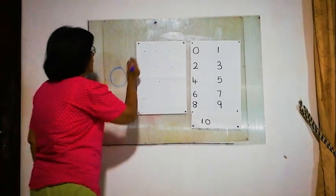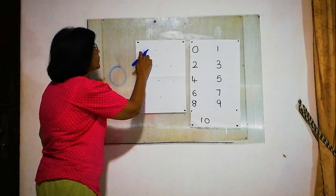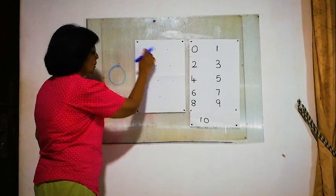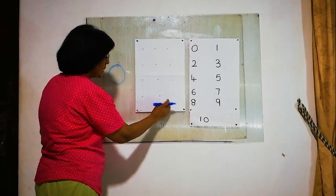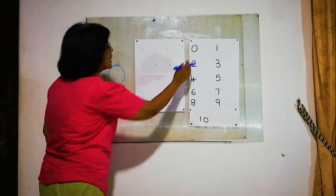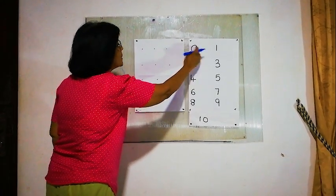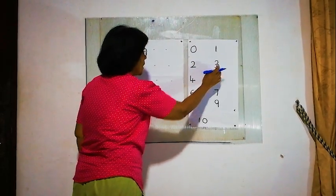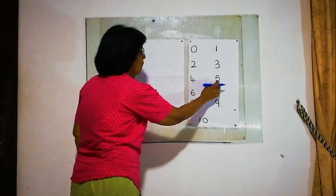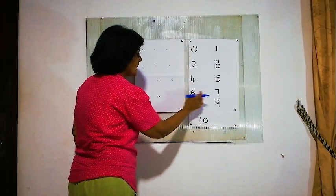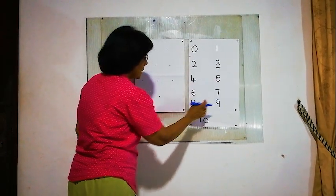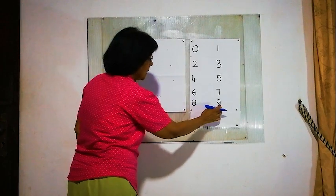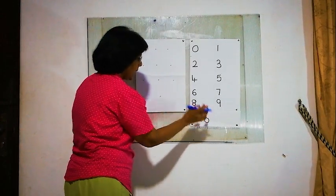Now we are going to write 0 to 10. 0, 1, 2, 3, 4, 5, 6, 7, 8, 9, 10.